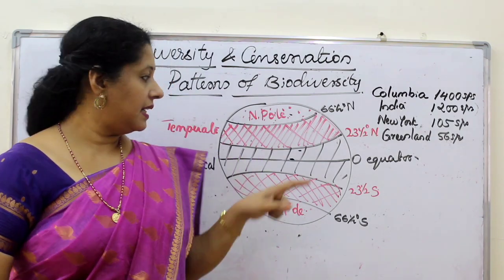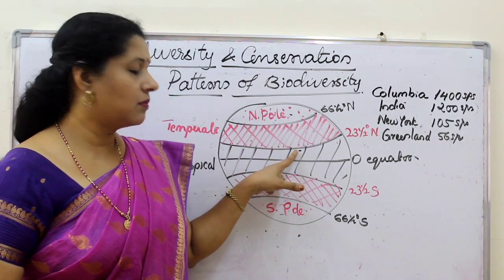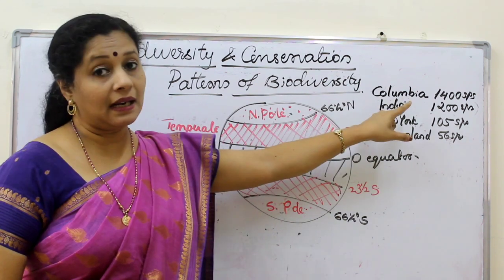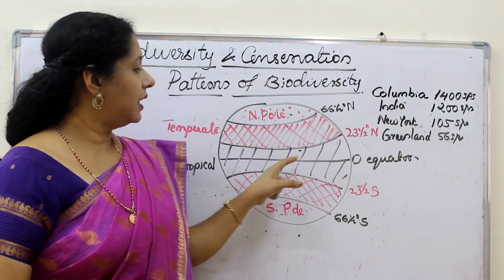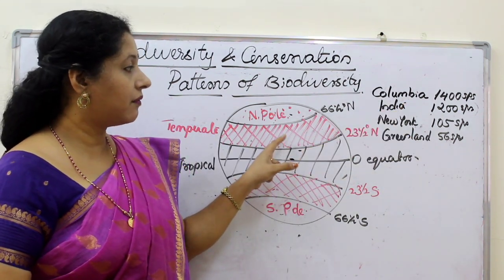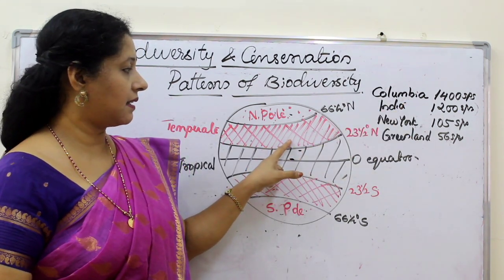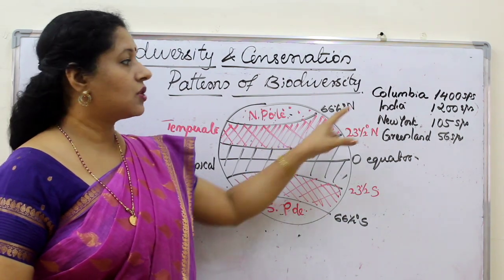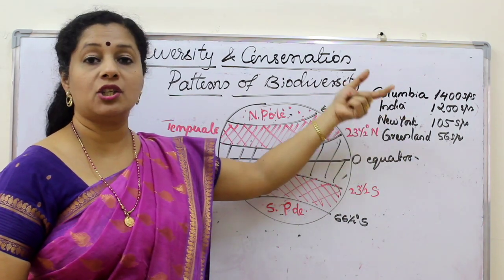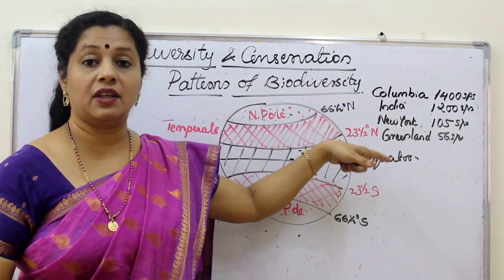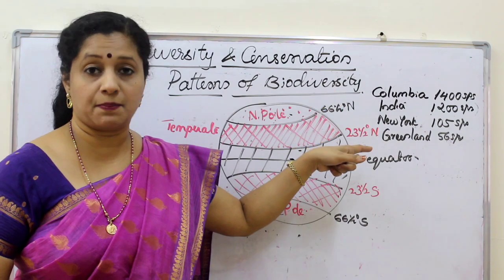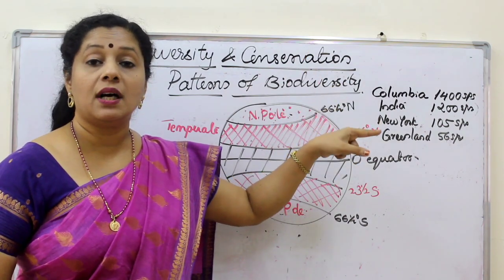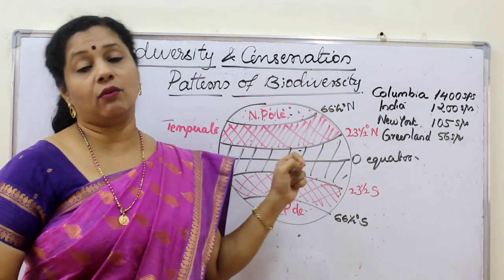Our country India is lying almost in the tropical zone, and here we have 1200 birds. But when you go to New York, which is at 41 degrees — somewhat in the temperate region — the species number comes down to 105. We are talking about bird species; from thousands, it is coming to 105 only.